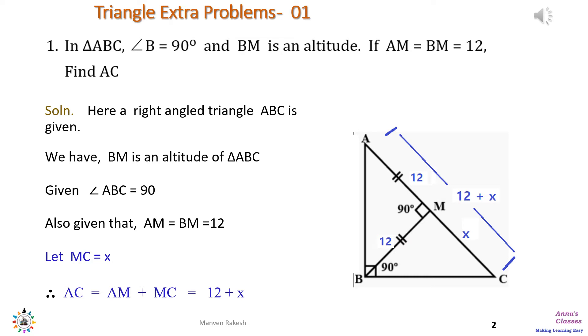Here we are given AM equals BM, both are 12. So the hypotenuse is now divided into two parts AM and MC. AM is given and we assume MC to be x. So the total length of hypotenuse AC which is made up of two parts AM plus MC becomes 12 plus x.